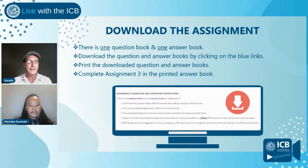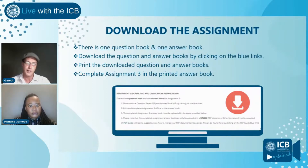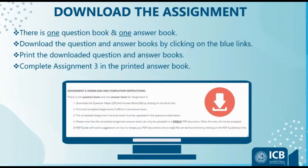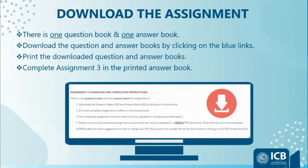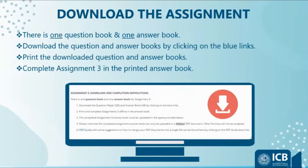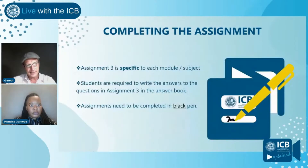When downloading the assignment, there is one answer book and one question paper on your POE — you will see little blue links. Students need to download both the question paper and the answer book, then print them off. We're looking specifically at assignment three, which happens in learning phase three. It is downloaded and completed offline, and the assignment is completed in the answer book.